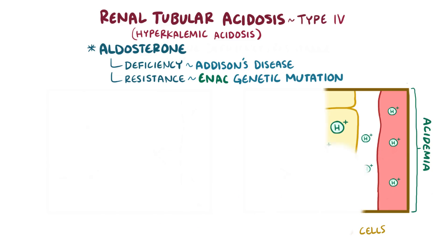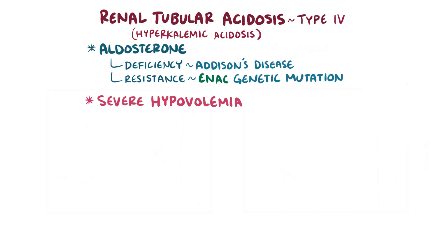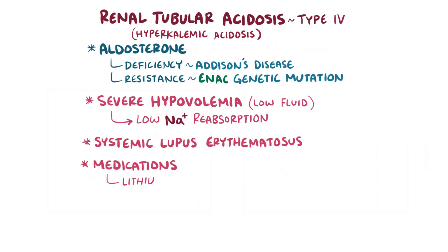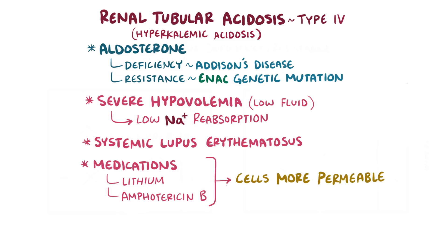There are some other causes of renal tubular acidosis type IV as well. One of them is severe hypovolemia, or low fluid volume, which means less sodium is available for reabsorption in the principal cells. The result is lower sodium levels inside the cell, which alters the ion exchange between sodium and potassium, resulting in low sodium and high potassium levels in the blood, and the resulting hyperkalemia contributes to acidosis. Another cause is systemic lupus erythematosus, as well as medications like lithium or amphotericin B, both of which make the distal tubule and collecting duct cells more permeable to hydrogen ions, allowing them to diffuse into the blood and causing acidosis.